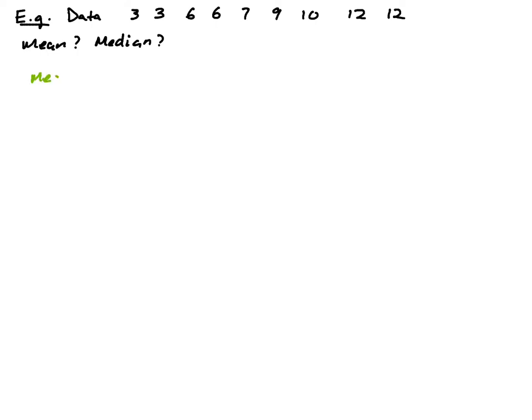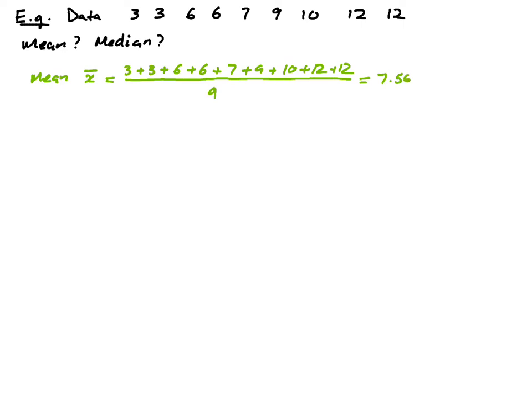Let's calculate the mean. To find the mean, you want to add up all the numbers and then divide by the number of items. So you take 3 plus 3 plus 6 plus 6 plus 7 plus 9 plus 10 plus 12 plus 12, divided by 9, since we have a total of 9 observations. That gives you a mean of 7.56.